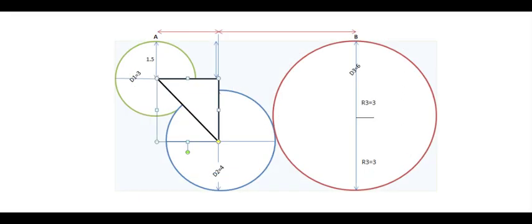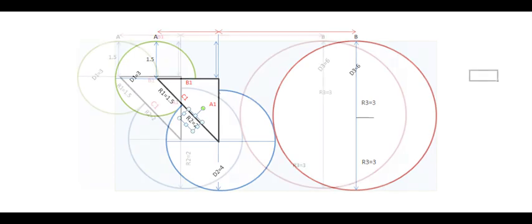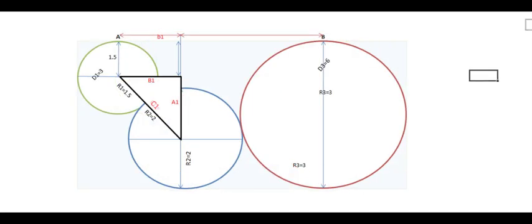First of all let us draw a triangle like this. This triangle will allow us to find the distance B1. In this triangle, we are able to first find out the value of C1 by adding the radius of green circle and blue circle. The value of C1 will be equal to R1 plus R2 which is 1.5 plus 2, that is 3.5.